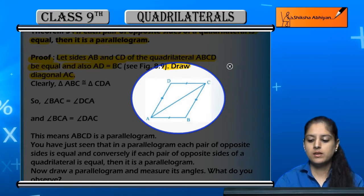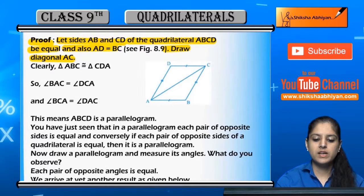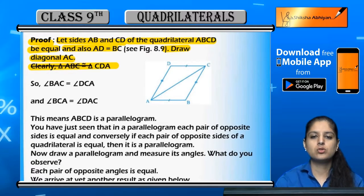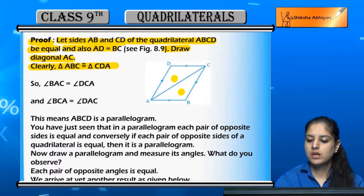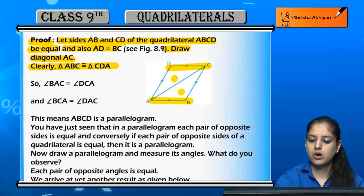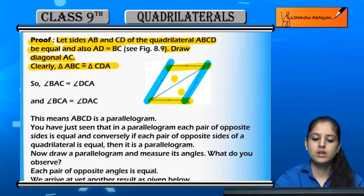AB and CD are equal, BC and AD are equal, and AC is the diagonal. So clearly triangles ABC and CDA are congruent. They are congruent because AC is common in both, AB equals CD, and BC equals AD. By SSS congruence, these two triangles are congruent.